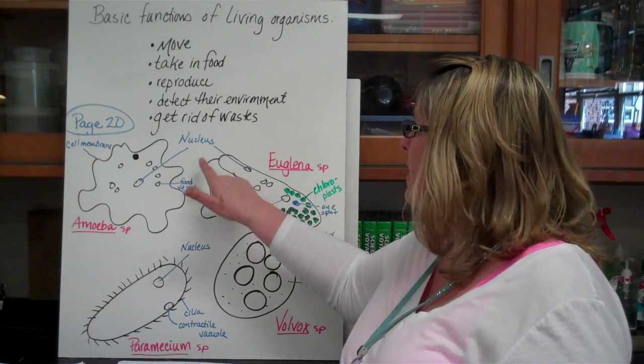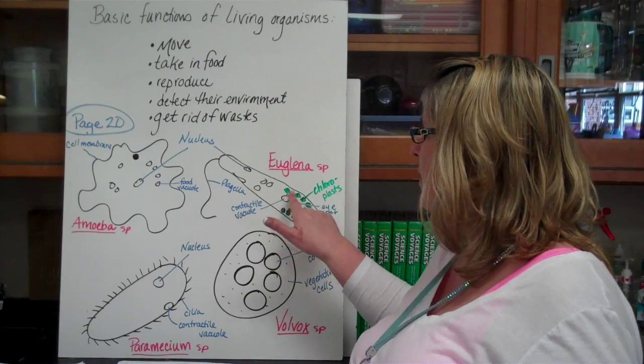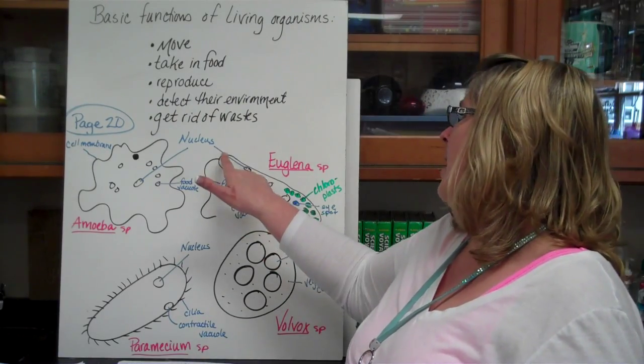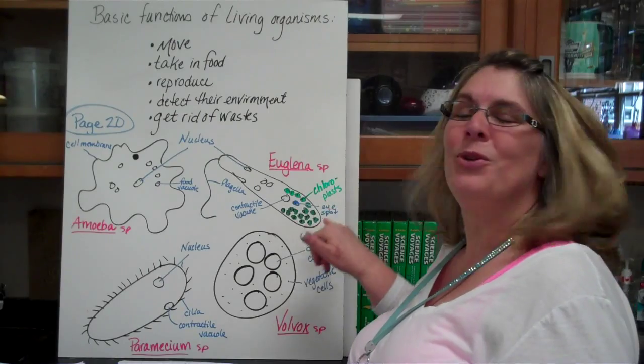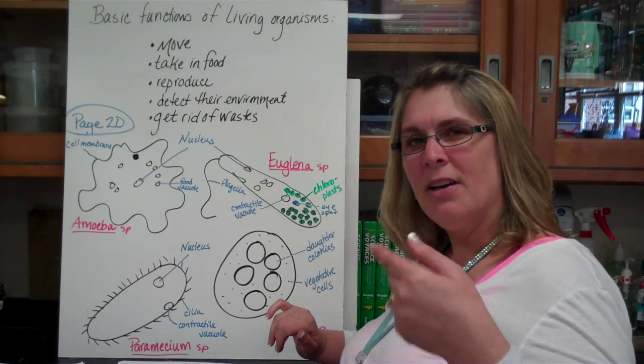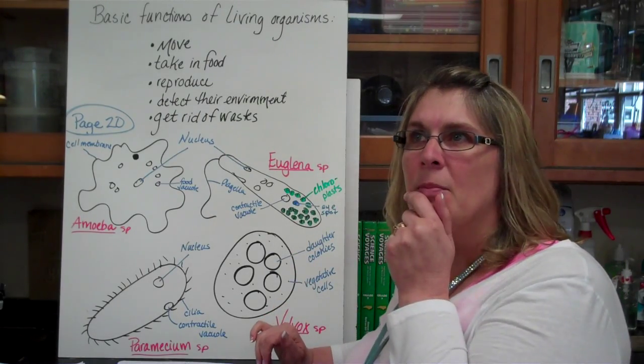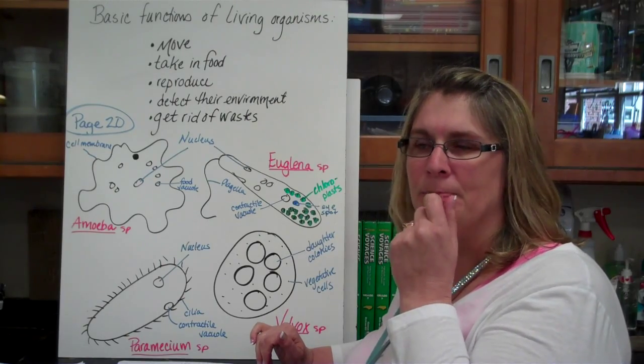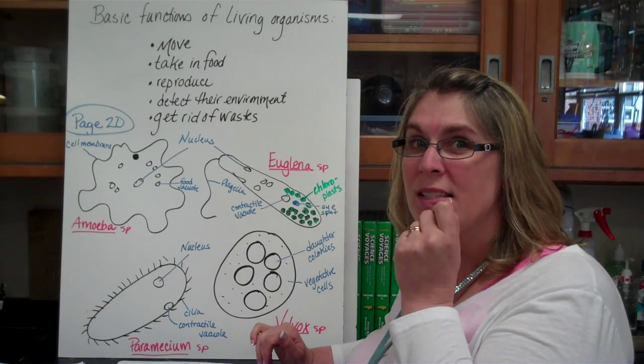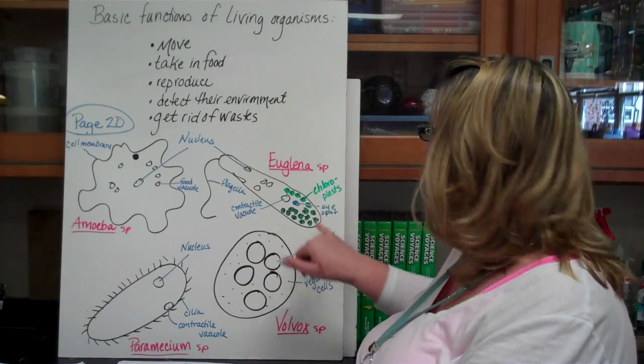Euglena is a little bit different. It has a flagella on it. A contractile vacuole. It has a nucleus just like the others. And it has chloroplast. That makes it a little bit different. The chloroplasts enable it to do some process that plants do. Do you remember what that is? Photosynthesis, you're right.